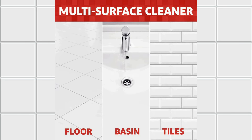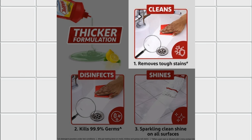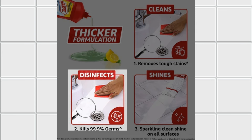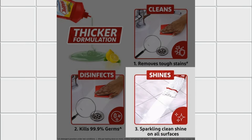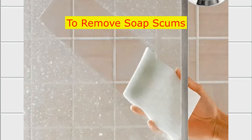We can use this bathroom cleaner to clean bathroom floors, wash basins, and bathroom tiles. It plays three different roles: first, it is a cleaning material — we have included surfactants. Second, it is a powerful disinfectant — sodium hypochlorite has been included. Finally, it gives a glossy, shiny look after cleaning — we have included silicone oil for that. It is very useful to clean fungus and mildew deposits on bathroom walls or surfaces, and it will also remove soap scum effectively.